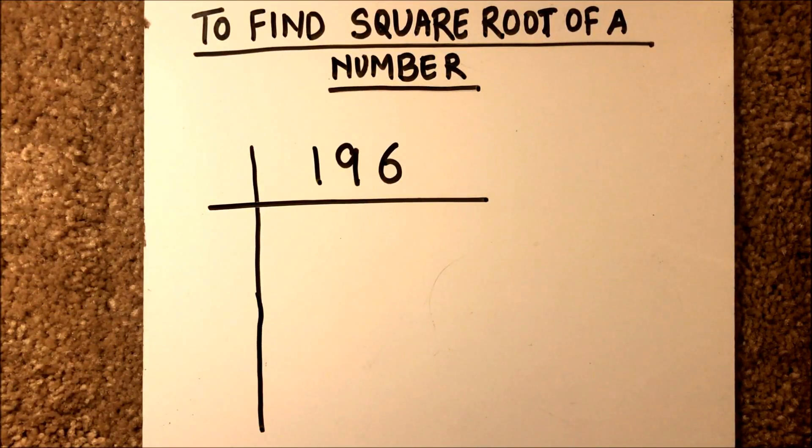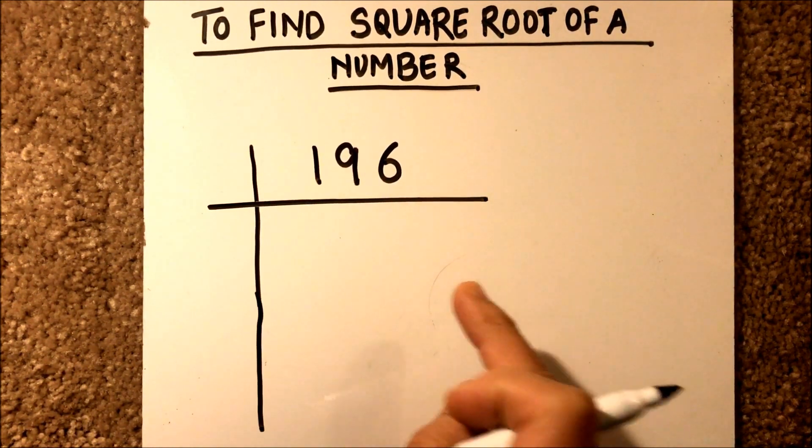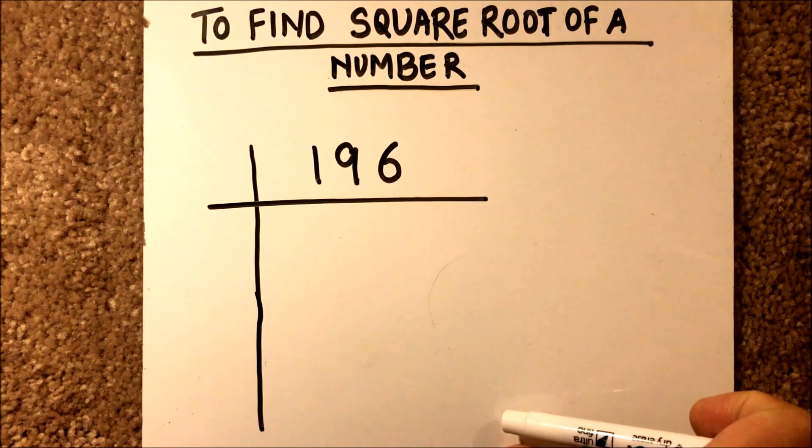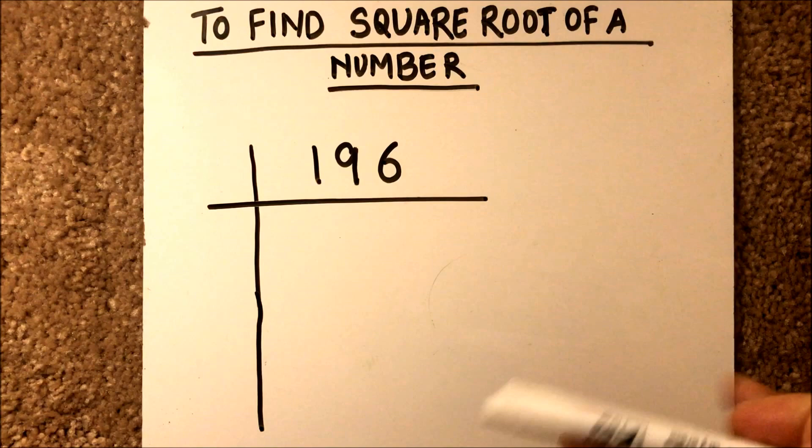Hello viewers, today I am going to tell you how to find the square root of a number. To find the square root of a number, we will write the number like this and then begin dividing the number with the minimum divisor. Here the number is even, so the minimum divisor is 2.